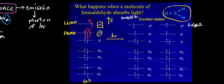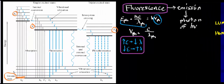When you expose a molecule or atom to light and electrons get raised in energy, this process is called absorption of light. Absorption promotes electrons from the HOMO into the LUMO. If you've studied conjugated pi electron systems or aromaticity in organic chemistry, you've probably seen some of this before. S1 and S2 are both singlet excited states; for now, let's focus on S1.